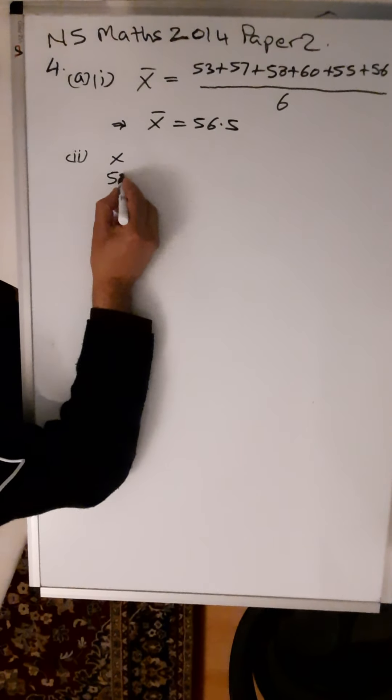To work out the standard deviation, you're going to end up with three columns. The first column is just the results that you're given—you write them vertically: 53, 57, 58, 60, 55, and 56. Your second column: you take the mean away from each of these results, so x minus x̄. And your third column: x minus x̄ all squared.